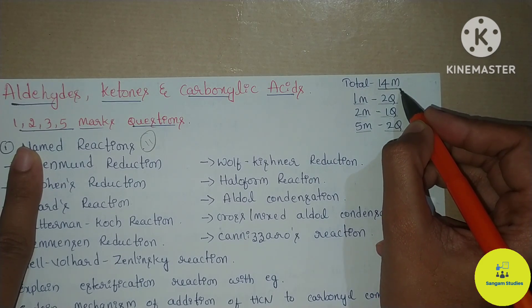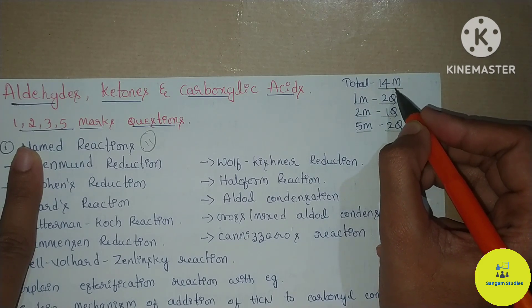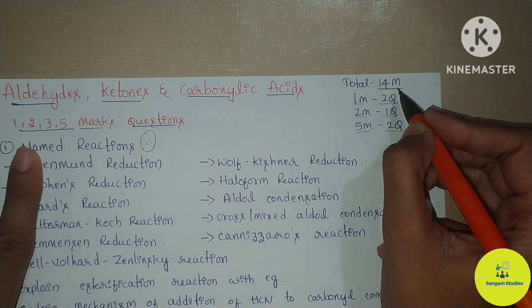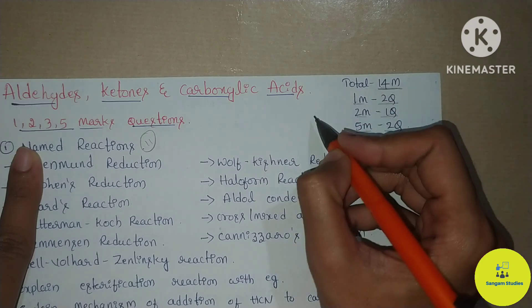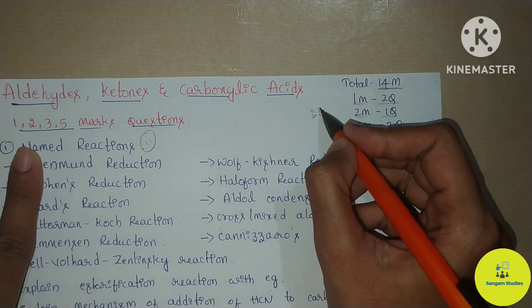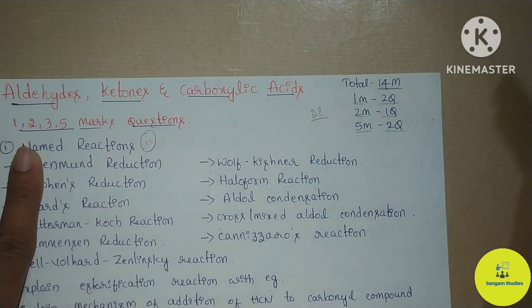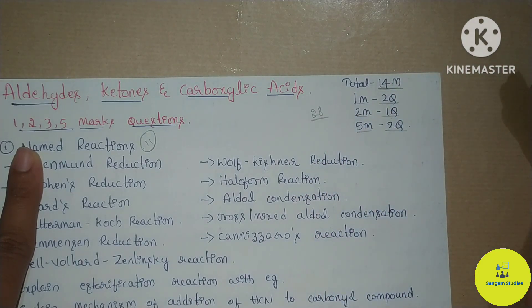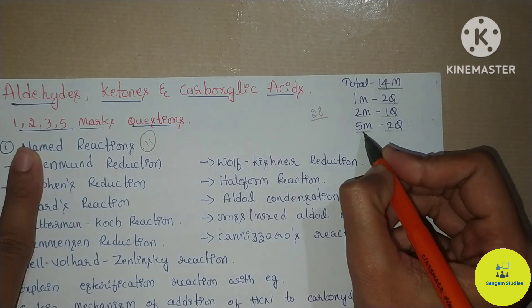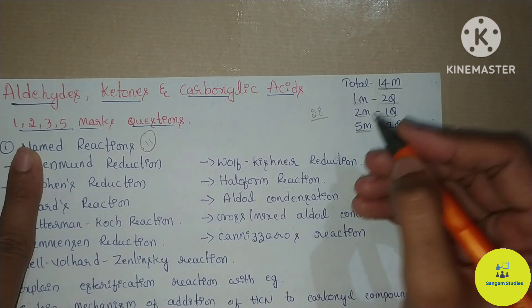You can tell this is the highest weightage chapter in chemistry. From the midterm examination point of view, 14 marks doubled gives 28 marks. You can expect around 28 marks, plus or minus 4 or 5 marks. In this slide, I'll tell the 5-mark questions directly.